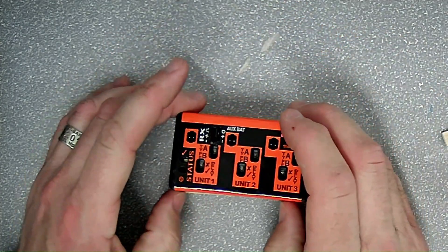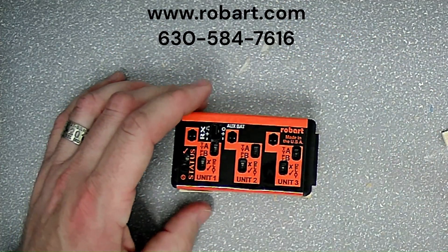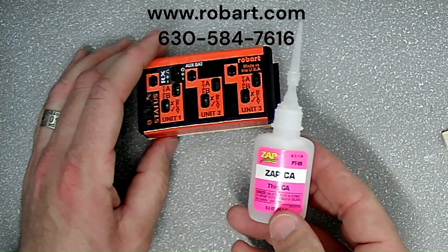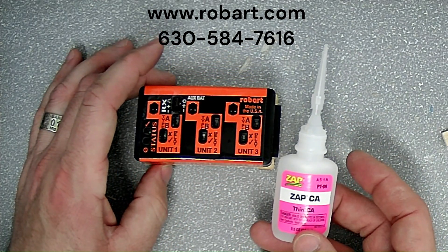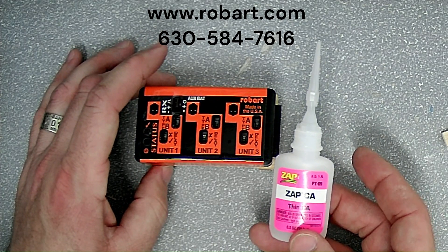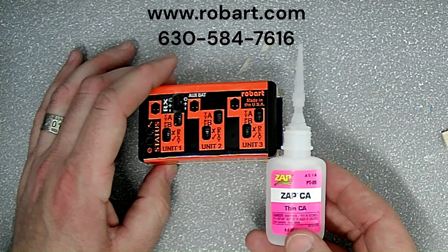If you've got any further questions on any of the Robart or Zap products, give us a call at 630-584-7616. Check us out online at www.robart.com, or follow us on Facebook, YouTube, Instagram, and Pinterest. Have a wonderful day.